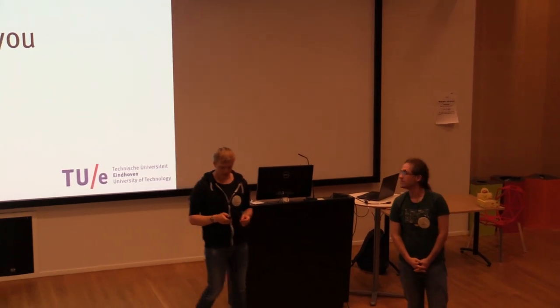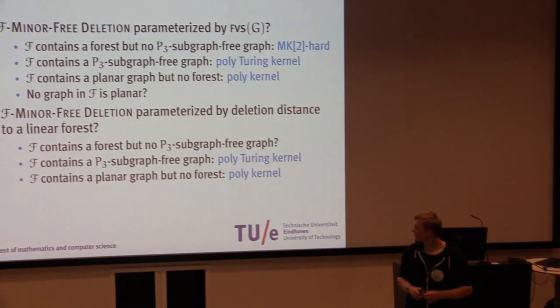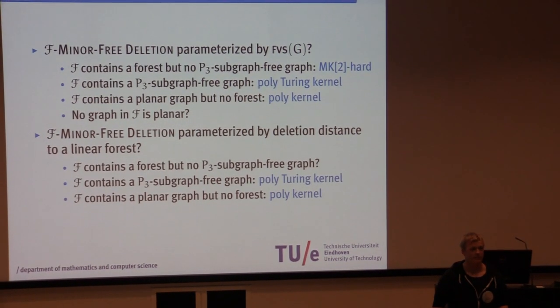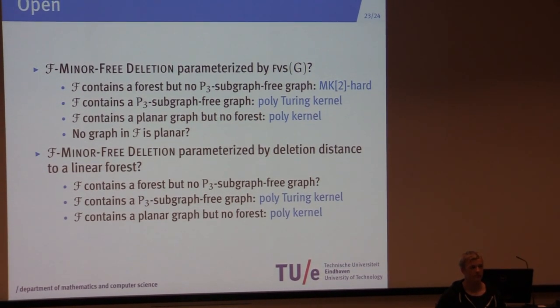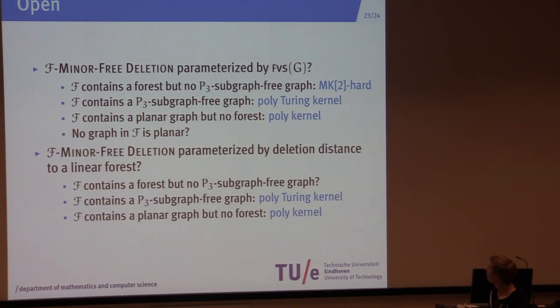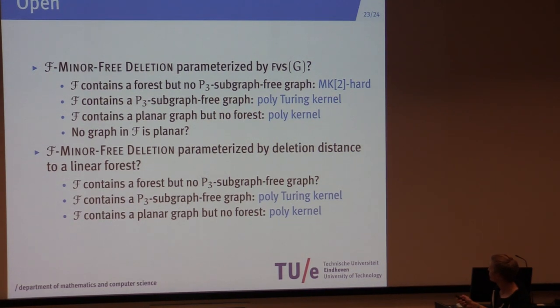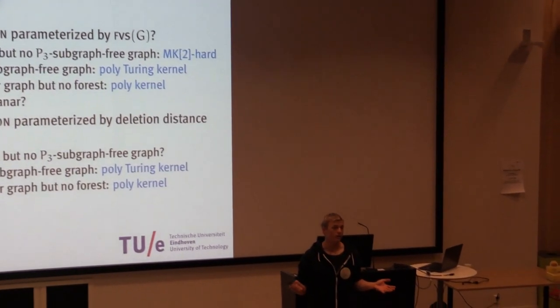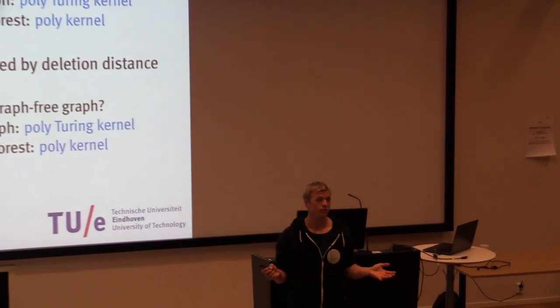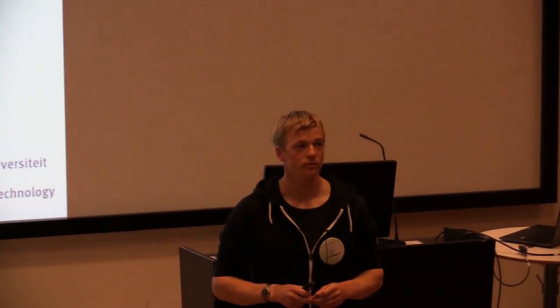Can you go back one slide? When you say F contains a P3-subgraph-free graph, it contains a polynomial Turing kernel — do you know that it doesn't contain a polynomial kernel? No, we don't. So it could also have a normal polynomial kernel — we don't know. This is also an interesting open question.